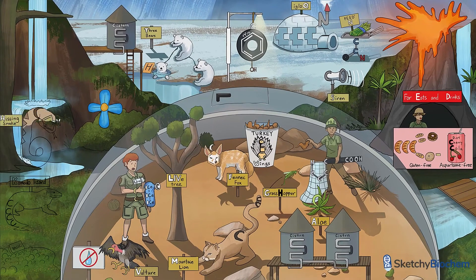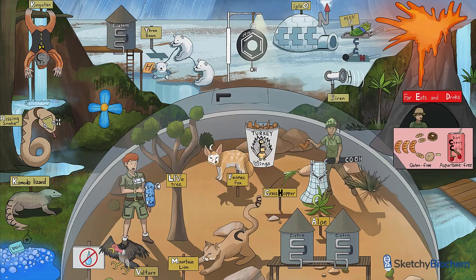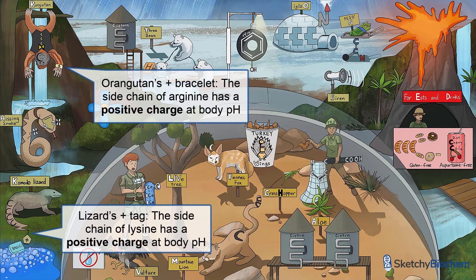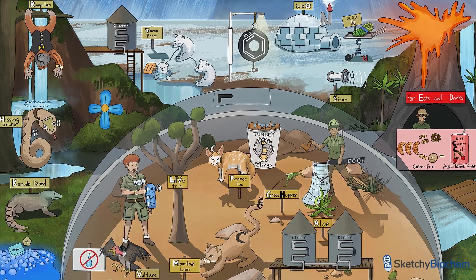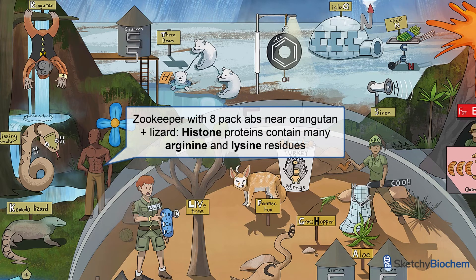We drew some basic soap in the jungle with an orangutan, lizard, and hissing snake to help you remember the basic amino acids: arginine, lysine, and histidine. Notice the side chains of arginine and lysine have a positive charge — see the orangutan's plus bracelet and the lizard's positive tag? Arginine and lysine are prevalent in histone proteins. Histones need to interact with negatively charged DNA, and their positive charge enables them to do so. This positive-negative relationship is really important in the regulation of transcription. The zookeeper reminds you that histone proteins contain many arginine and lysine residues.